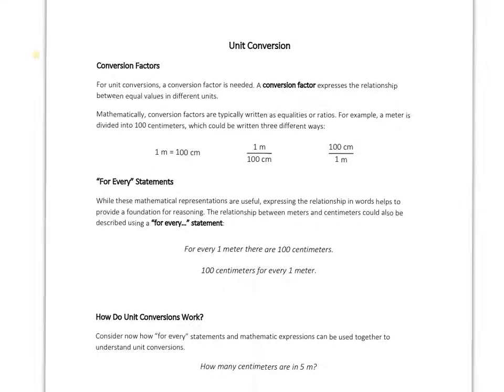Sometimes when we take measurements, we want to use a different unit than what the measurement was taken in. In order to do that, we're going to need a conversion factor. A conversion factor is a way to express the relationship between equal values in different units. We can show this mathematically using an equality or a ratio.